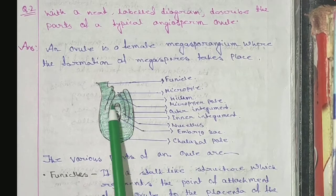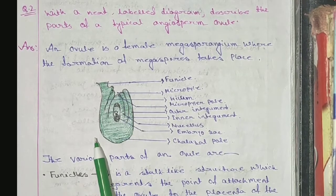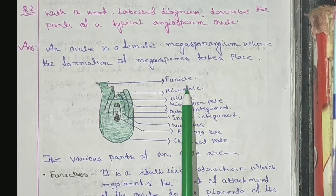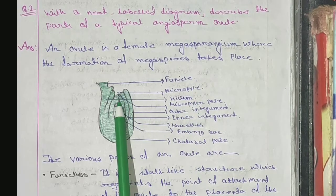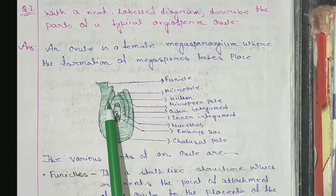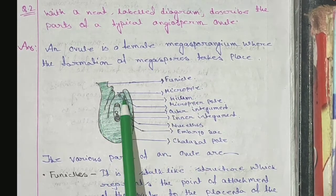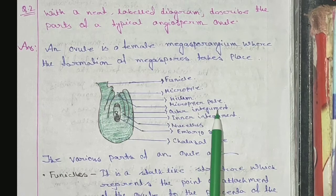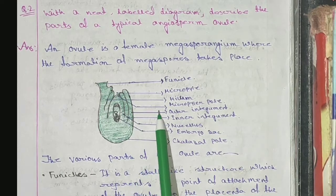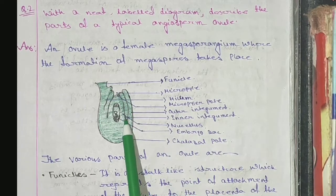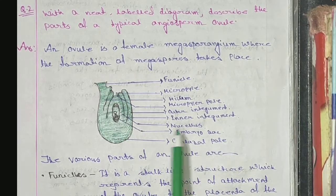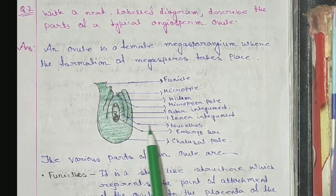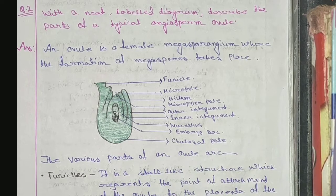Here is a structure of a typical ovule. This part is the funicle. This portion is the micropyle. This portion is the hilum. This is the micropyle pole. This is the outer integument, and this portion is the inner integument. Here is the nucellus, and this end is known as the chalazal end.